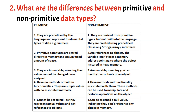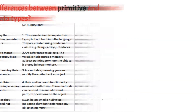D - Methods and functionality: Primitive data types have no methods or built-in functionality; they are simple values with no associated methods. Non-primitive data types have methods and functionality associated with them. These methods can be used to manipulate and perform operations on the objects. E - Nullability: Primitive data types cannot be set to null, as they represent actual values and not references to objects. Non-primitive data types can be assigned a null value, indicating that they do not reference any object in memory.